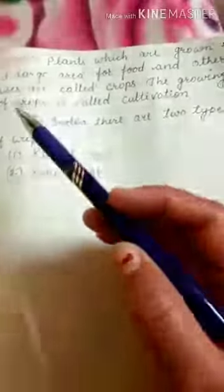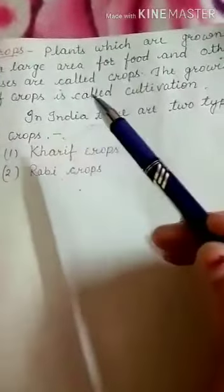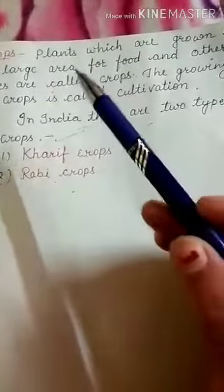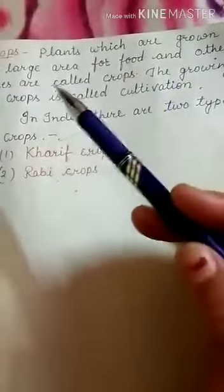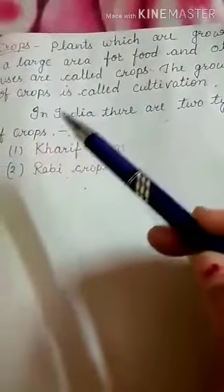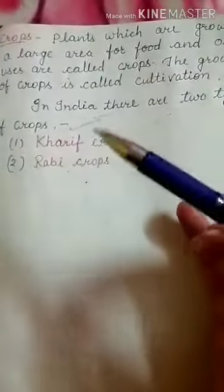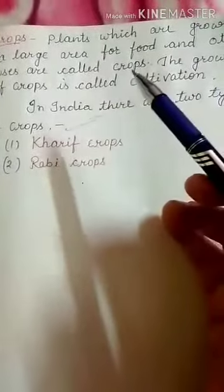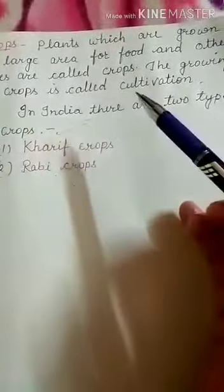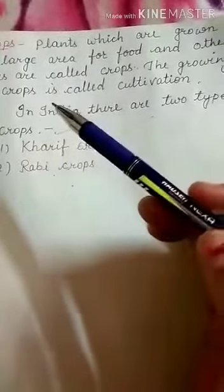Next is crops. Plants which are grown in a large area for food and other uses are called crops. The growing of crops is called cultivation.